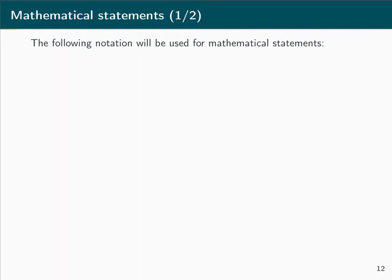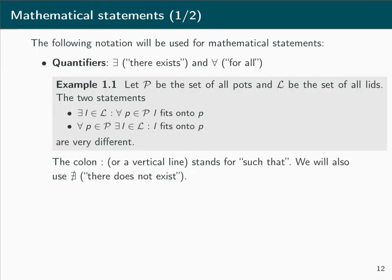Before we look at these proofs in more detail, we introduce some basic mathematical notation. A very essential type of notation are the quantifiers 'there exists' and 'for all,' which are represented by these two symbols that will appear very frequently throughout the course and which are also very commonly found in the mathematical literature.